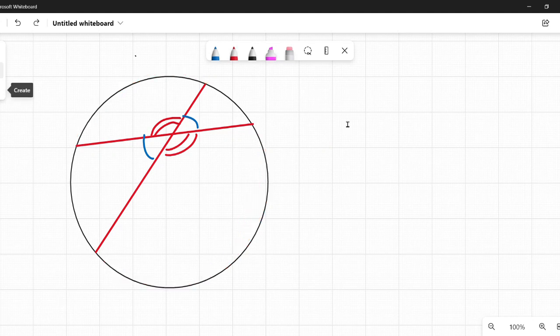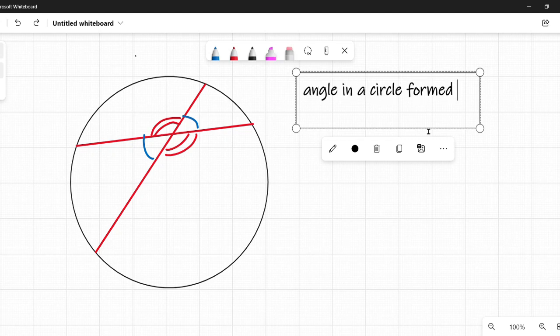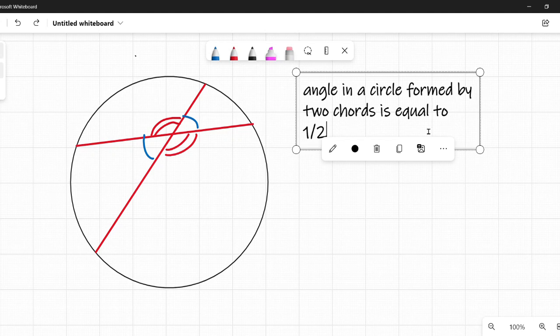Okay, so if I wanted to explain this formula in words, as opposed to a formula, I would say that an angle in a circle formed by two chords is equal to one half the sum of the intercepted arcs.